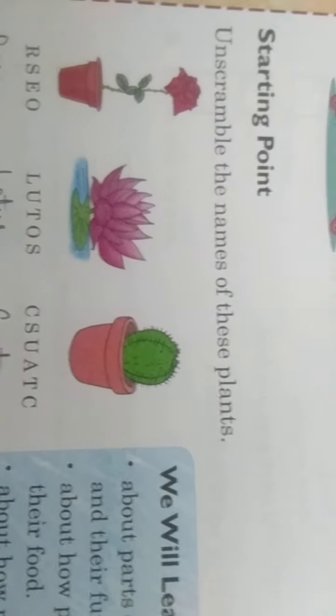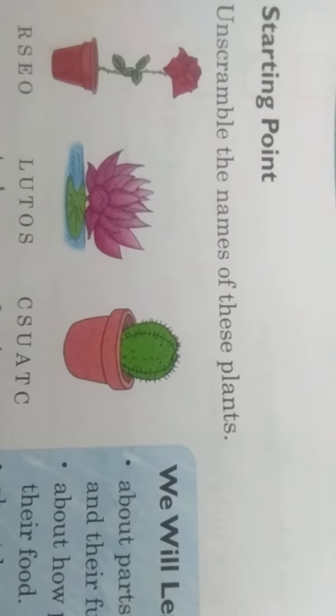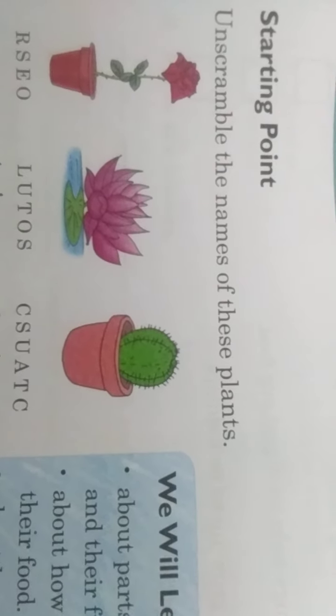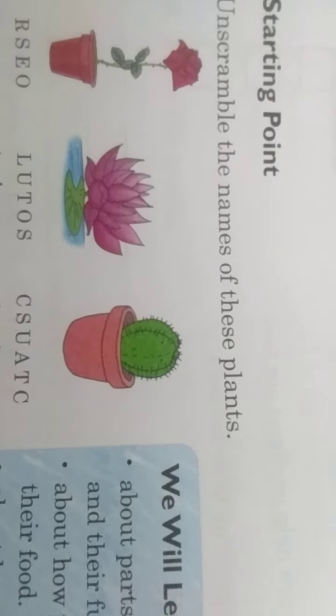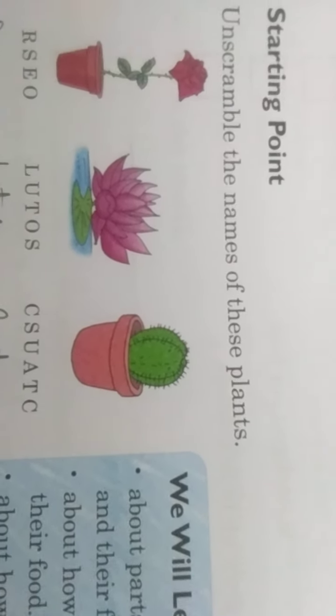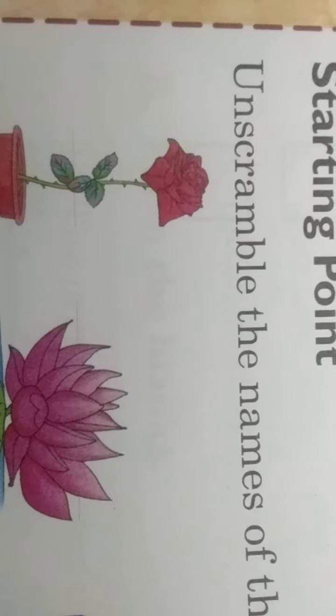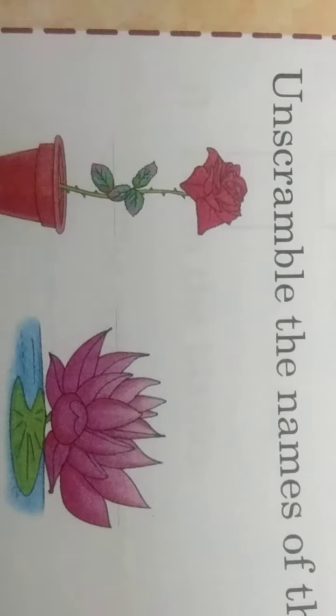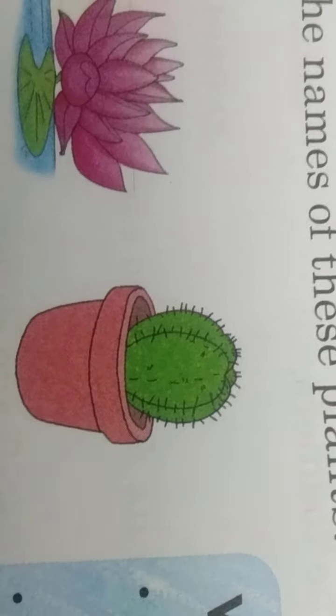Starting point: Unscramble the name of these plants. These plants are called missed words — you have to unscramble and write the correct name. The first one — you can see which plant this is. This is Rose. Next is Lotus. And the third one is Cactus. You can write them in the correct order: Rose, Lotus, Cactus.